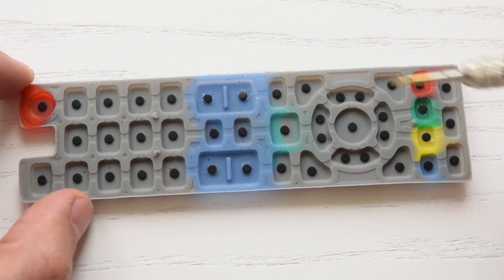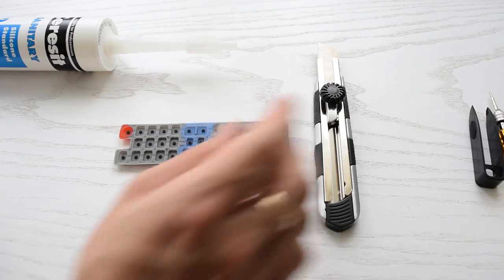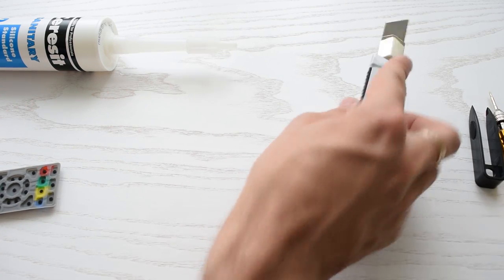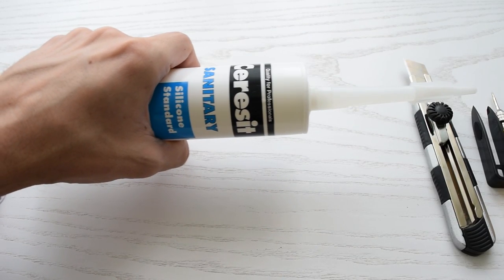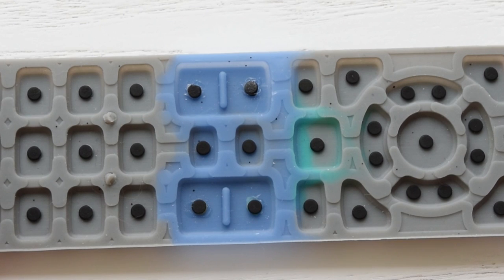So we can just swap these pads. We need a cutter or a sharp knife and silicone glue. Sanitary silicone works just fine. If you have a bit smaller or bigger rubber pads, they still will work fine.